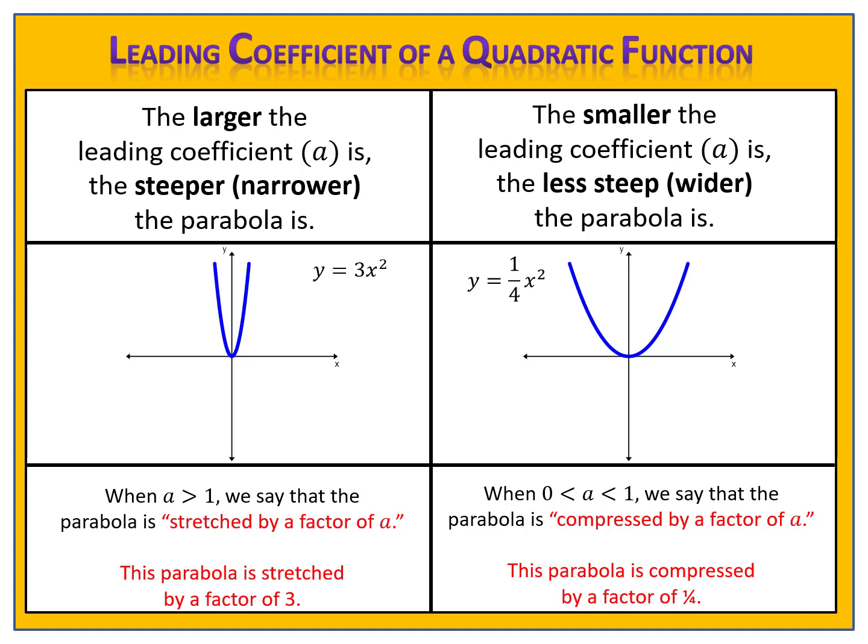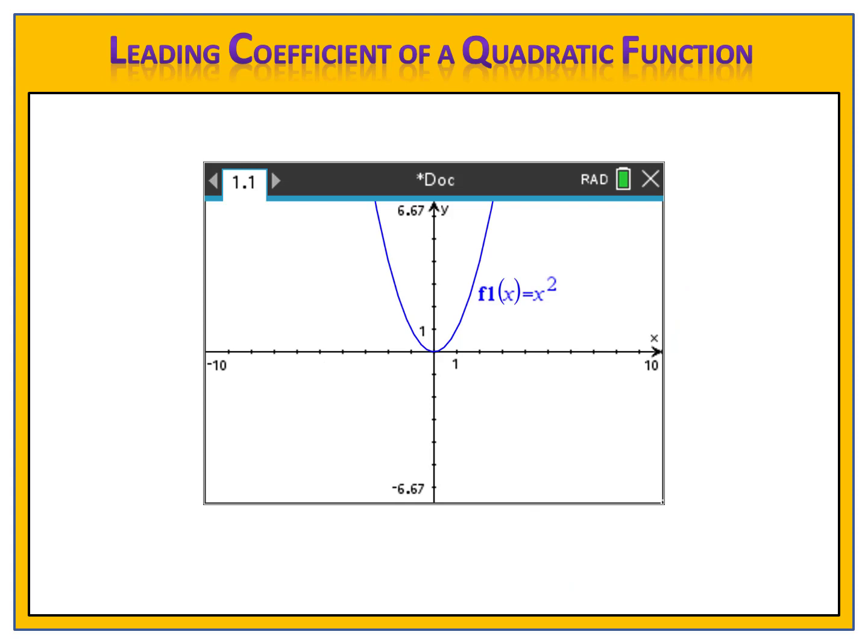Now the one situation we haven't talked about is: what if the leading coefficient is negative? What if, for example, we had y equals x squared as our basic equation and we changed it to y equals negative x squared — in other words, the leading coefficient was negative 1? Notice what happens: the parabola has flipped over the x-axis, or mathematically speaking, the parabola has reflected over the x-axis. What if we change that negative 1x squared to negative 2x squared? Notice now the parabola is steeper and reflected.